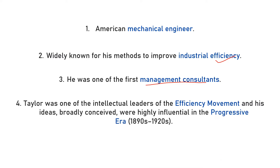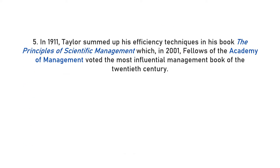Taylor was one of the most highly intellectual leaders of the efficiency movement, and his ideas were hugely reflected in the progressive era of the 1890s to 1920s. In 1911, Taylor summed up all his ideas and techniques of efficiency in his book The Principles of Scientific Management, which was voted the most influential management book of the 20th century in 2001 by the fellows of the Academy of Management.